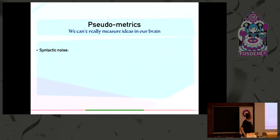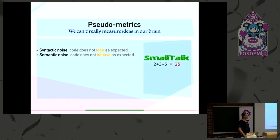Let's start with something I call pseudo-metrics. Pseudo-metrics are pseudo because we can't really measure what is in our brain yet, however they are quite intuitive and easy to use. Syntactic noise is code that does not look as expected. An example is in Lisp you write plus 2 3, whereas in mathematical notations you write 2 plus 3. Semantic noise is code that does not behave as expected. An example is Smalltalk where if you write 2 plus 3 times 5, you get 25 and not 17 because Smalltalk passes objects left to right and precedence is not respected.